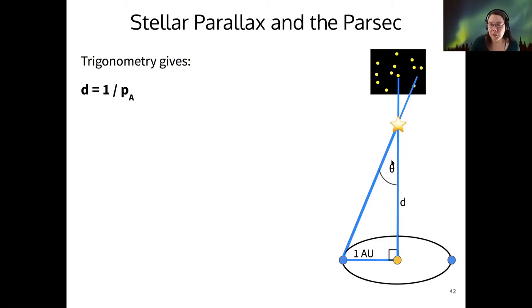This angle here is what I mean by parallax angle. I should update the slide to say so. And so our d, the distance, is given in the unit of parsecs. This is a new distance unit. And then our parallax angle is measured in arcseconds. So what is an arcsecond?